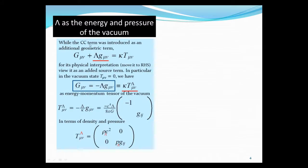While the cosmological constant was introduced as an additional geometric term on the left-hand side, for its physical interpretation, it's easier to move it to the right-hand side. We view it as an additional source term. In particular, in the vacuum state, when the normal T_mu_nu is 0, we have the Einstein equation that looks like this. And then we interpret the lambda term as the energy momentum of the vacuum state. So T_mu_nu lambda indicates the vacuum state.